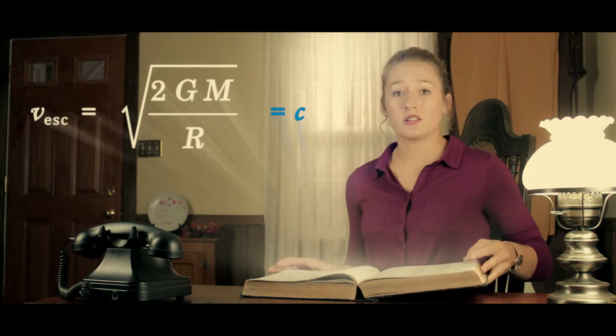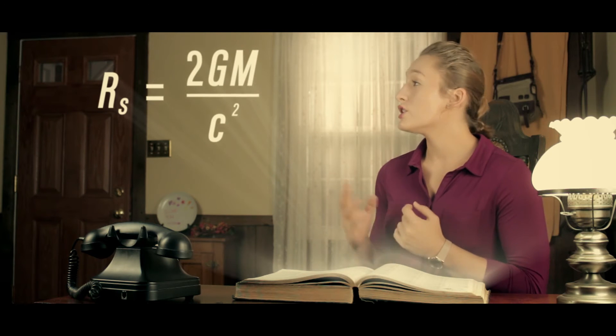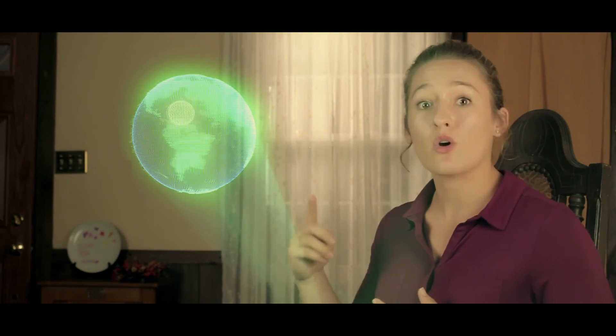Schwarzschild discovered that if the radius of an object became small enough, then the escape velocity could reach the speed of light. The escape velocity is the amount of speed required to escape the gravitational pull of an object. Schwarzschild proved this with his equation: rs equals 2GM divided by c squared. For example, the escape velocity of the Earth is approximately 11 kilometers per second, while the Moon is traveling at approximately 1 kilometer per second. Since the Earth's escape velocity is so much larger than the speed of the Moon, the Moon cannot escape the gravitational pull of the Earth, which is why it orbits us.